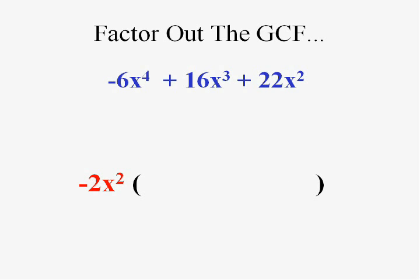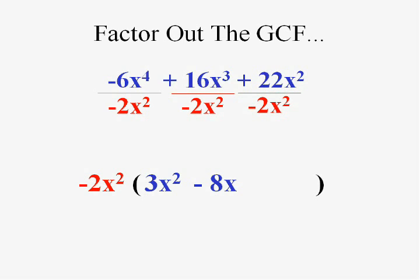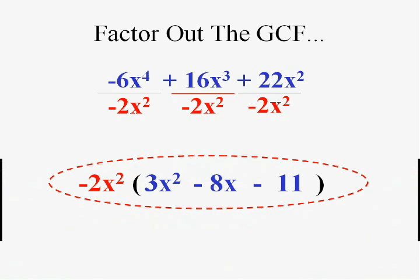I'm going to do three little division problems. Negative 6x to the 4th divided by negative 2x squared. I got rid of the negative, didn't I? 16x to the 3rd divided by negative 2x squared. Now, that one is negative, but I don't mind the second one being negative. It's the first one that I want to watch out for. And dividing here, I get a negative 11 because the x squareds cancel.